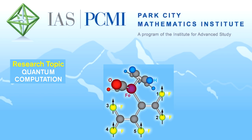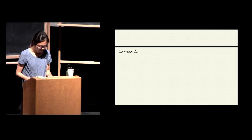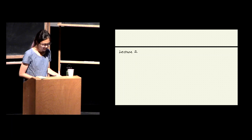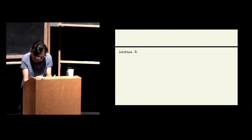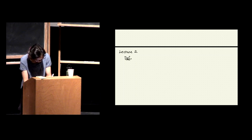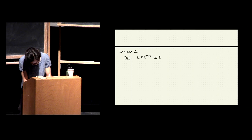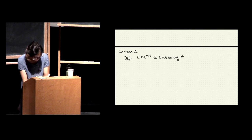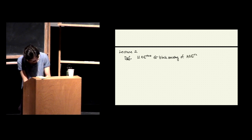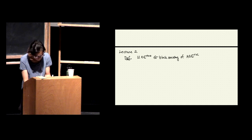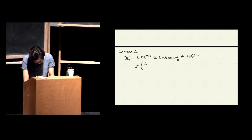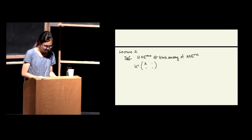I'm going to start by recalling some things from last time. We defined this notion of block encoding, where we said that we have a unitary U which is a block encoding of a matrix A. We can write U in this form where U has A as a sub-matrix in the top left.